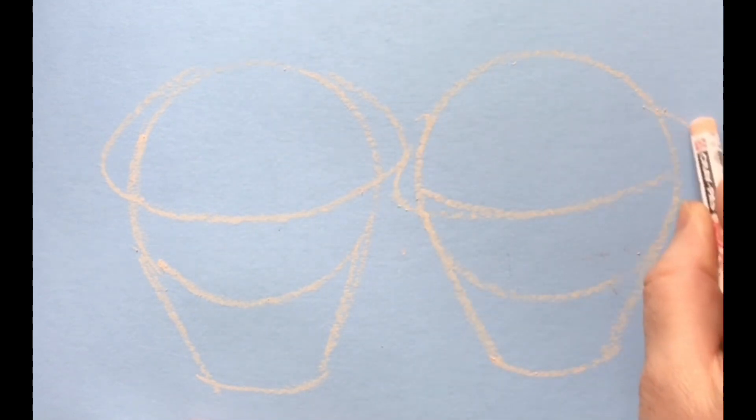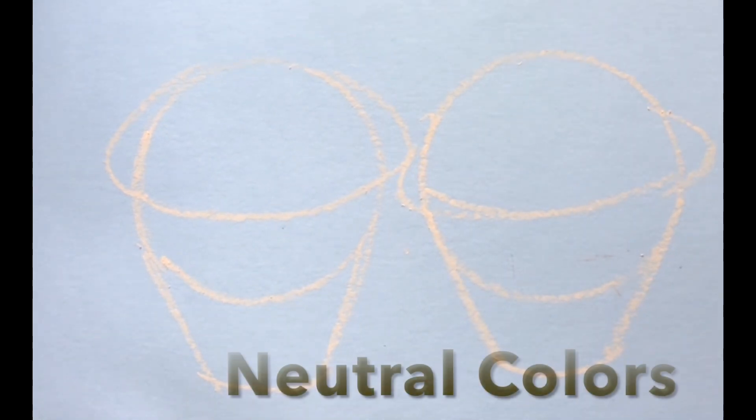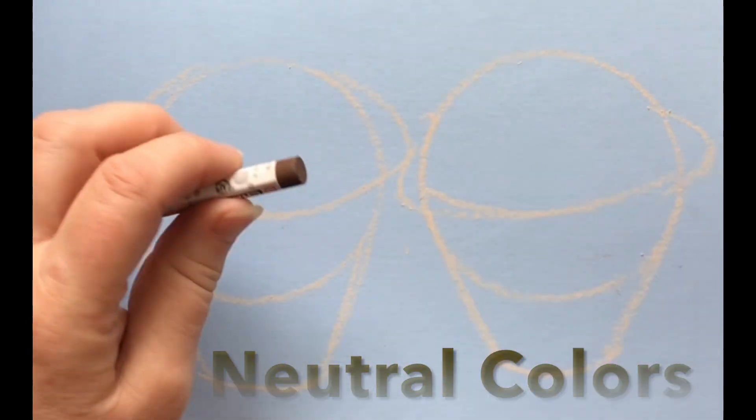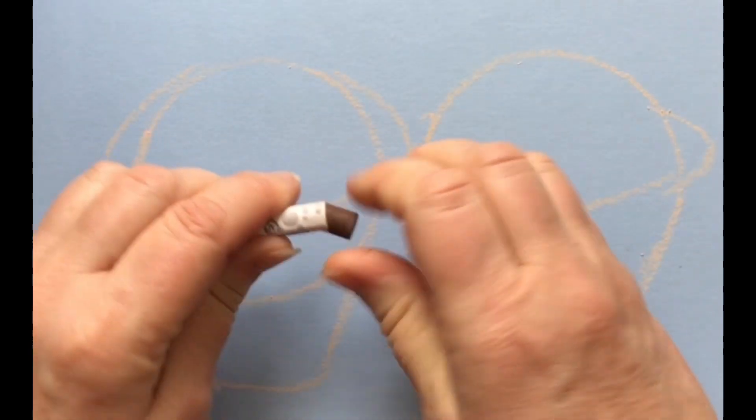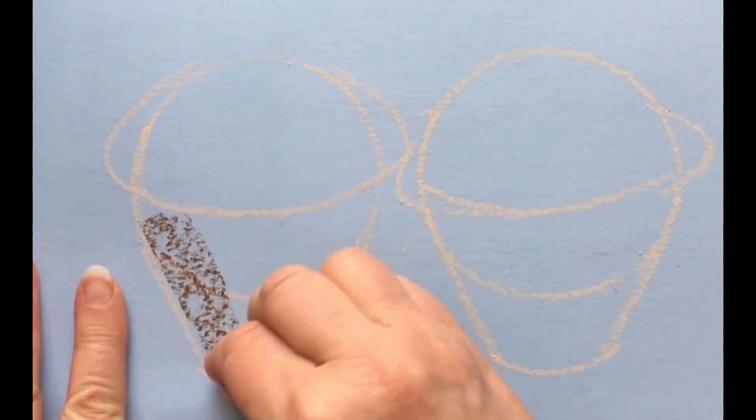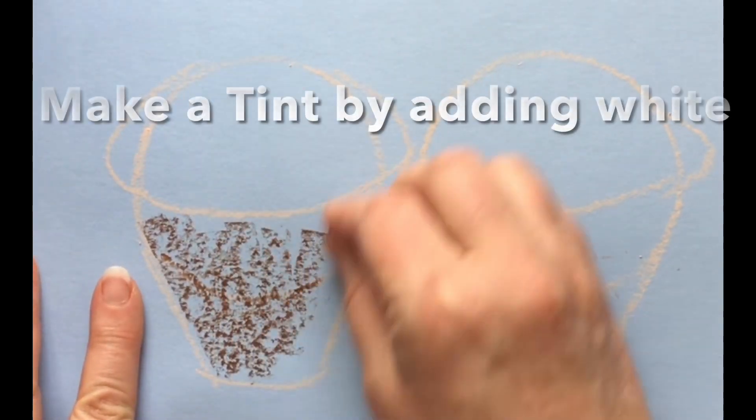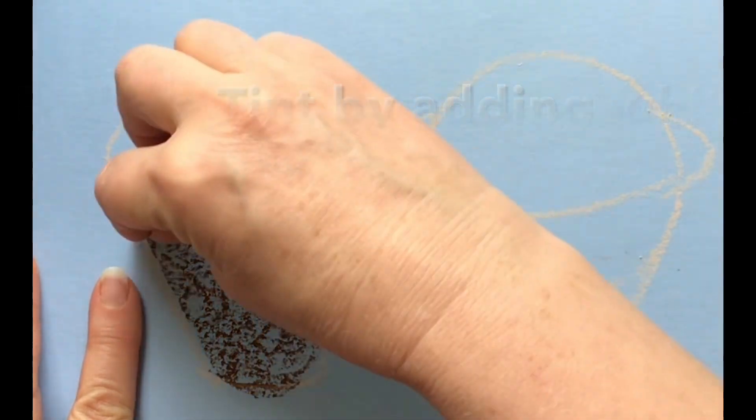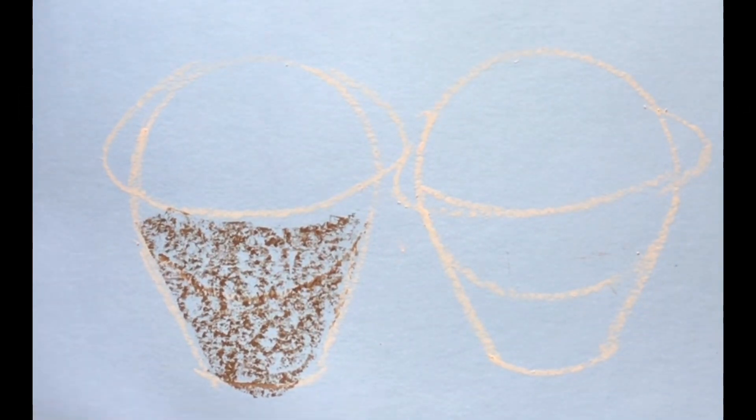And then up here I'm going to pull this out. So in the Virginia SOLs they talk about neutralizing a color, and what neutralizing would be is like a tint or a hue of it.